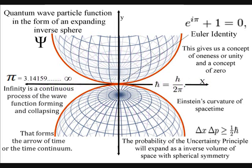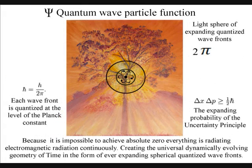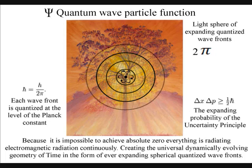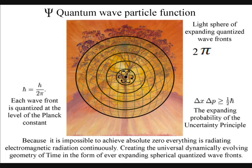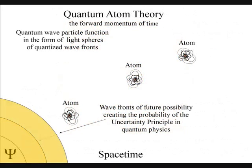We have the paradoxes of quantum mechanics because we have no fundamental understanding of the time continuum. In quantum atom theory, the emission and absorption of light or electromagnetic radiation from one atom to another creates the forward motion of time.